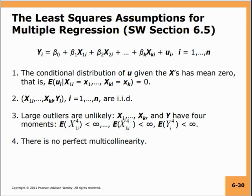Our population regression model is: yi equals beta 0 plus beta 1 x1i plus beta 2 x2i, up to beta k xki. So you are including k regressors plus ui. You have a predicted regression plane — in this case a hyperplane that includes all dimensions x1, x2 up to xk — and because it is a stochastic relationship there will be an error left over, which is ui, where i equals 1 to n.